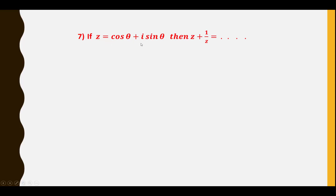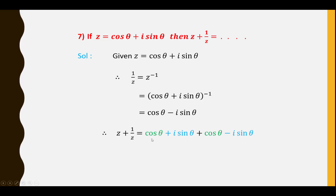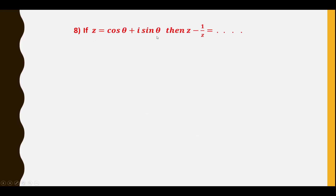Seventh question: If Z = cosθ + i sinθ, find Z + 1/Z. Since 1/Z = Z⁻¹ = (cosθ + i sinθ)⁻¹ = cosθ − i sinθ, we have Z + 1/Z = (cosθ + i sinθ) + (cosθ − i sinθ). The i sinθ terms cancel, giving 2cosθ.